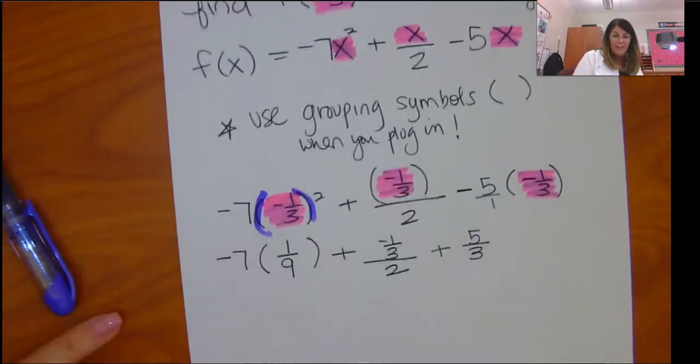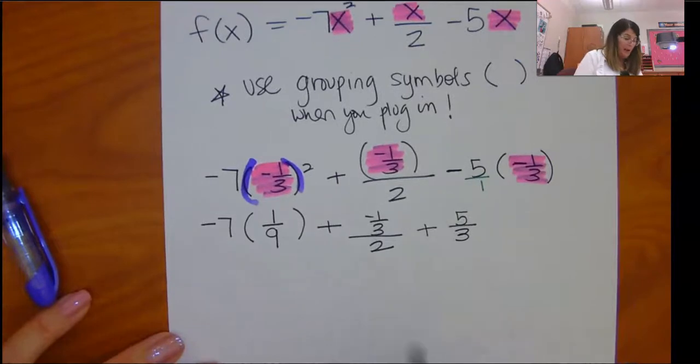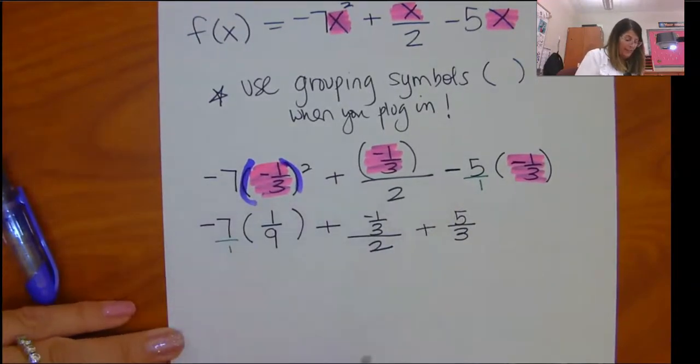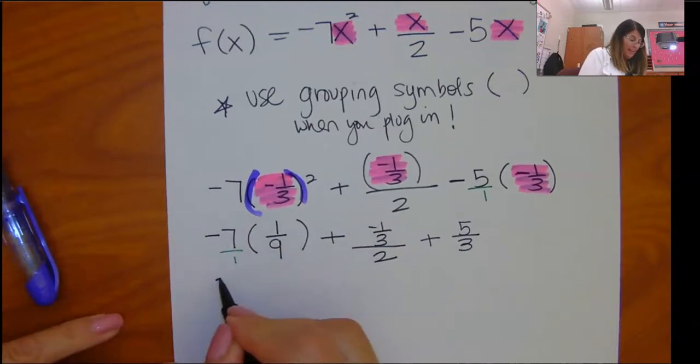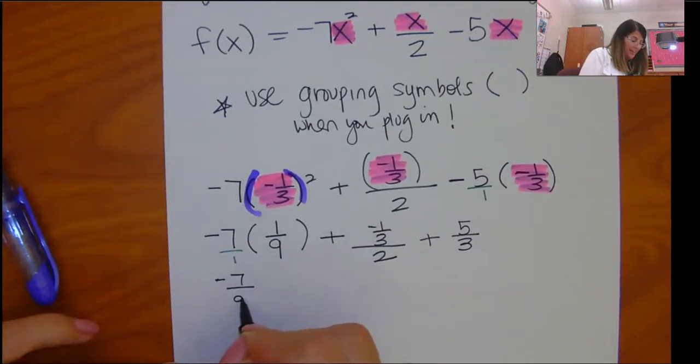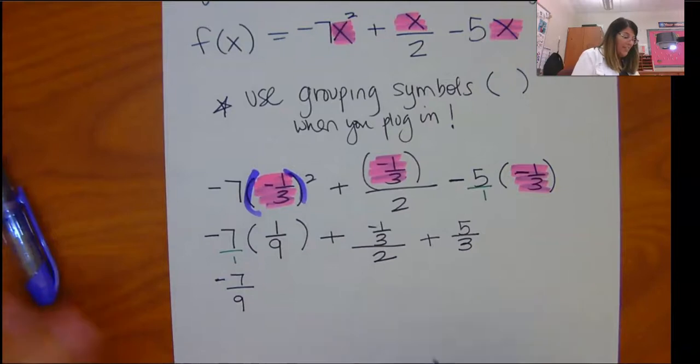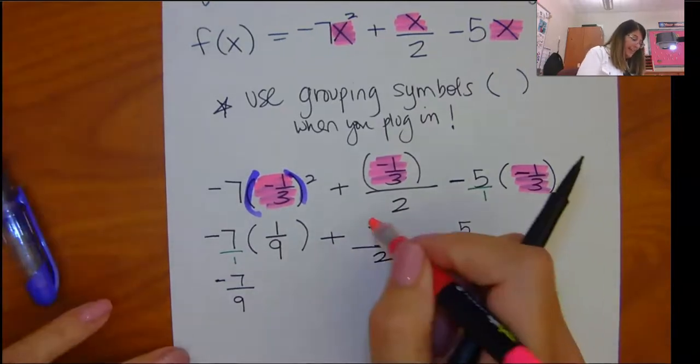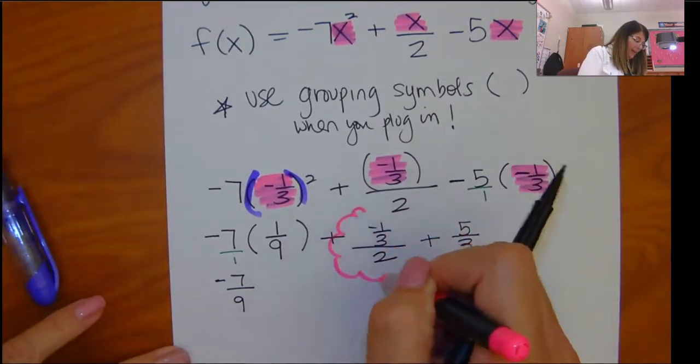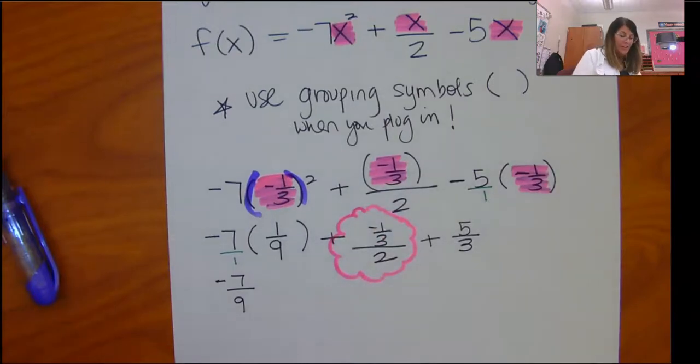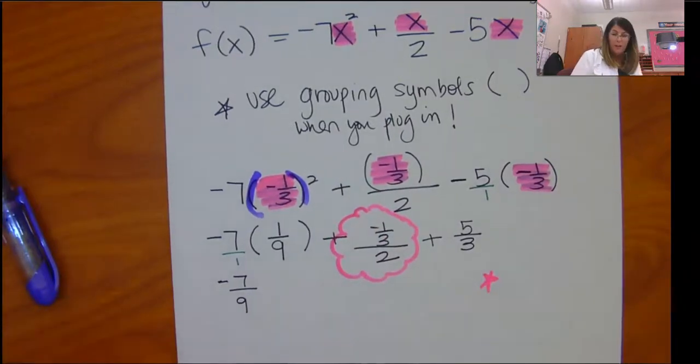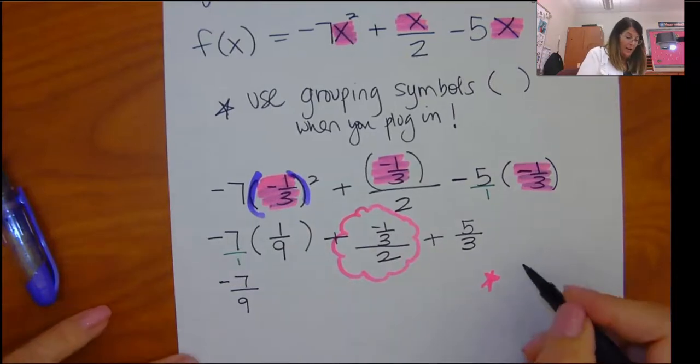Now, I have got a couple different things going on here in terms of looking at this problem. First of all, here, this one is going to be pretty easy, multiplying straight across, negative 7 ninths. But this right here, this is a complex fraction, a fraction within a fraction. So let's come over here and let's work on that, just to talk about it for a minute.